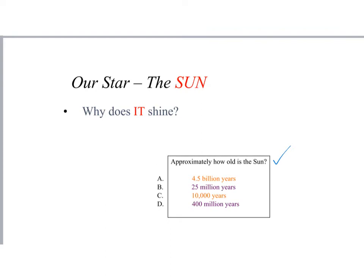Here's the question that we need to remember. Any guess here? How old is the Sun? I would say about five billion years, or 25 million years, or 10,000 years, or 400 million years. I would say the Sun should be at least as old as the Earth.